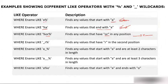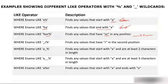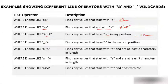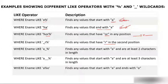WHERE name LIKE '_r' means the first character could be any character from A to Z, but the second character must be 'R'. This finds any value that has 'R' in the second position, regardless of what the first character is.